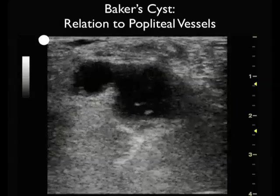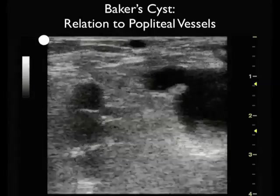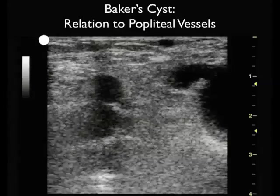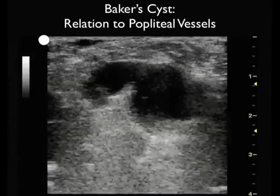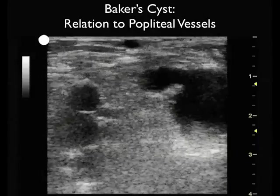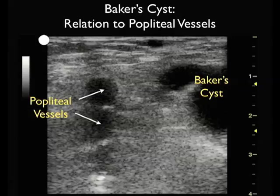In this video clip we're going to change the depth of the ultrasound image to better interrogate the Baker's cyst in its relation to the popliteal artery and vein. Here we see the single superficial Baker's cyst to the right, in relation to the popliteal artery and vein seen deeper on the image and to the left. Note they have very different appearances — the Baker's cyst is a single structure in contrast to the paired popliteal vessels.